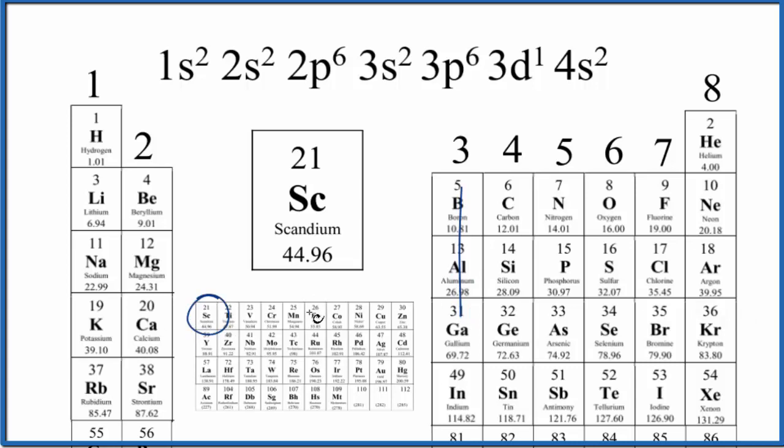So to figure out the number of valence electrons for scandium, we first need the electron configuration. So scandium has 21 electrons. So these are distributed here in our electron configuration.